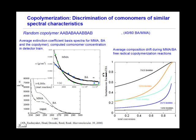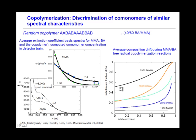Knowing the concentration of the comonomers allows us to determine the average composition drift during the copolymerization. Shown on the right is the instantaneous fraction of butylacrylate versus total conversion for four reactions done with different initial comonomer compositions. This makes it unnecessary to separately determine the reactivity ratios, since we have the composition drift at each moment during the conversion.